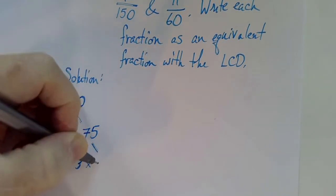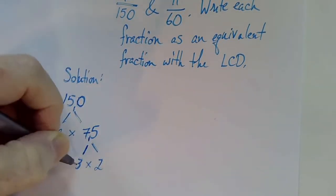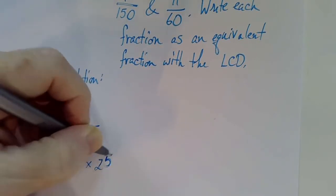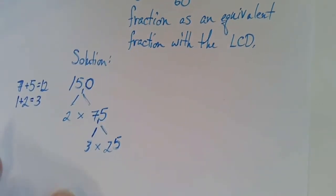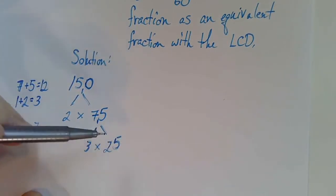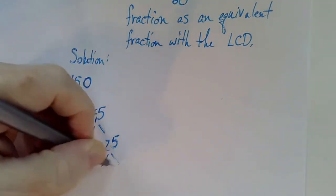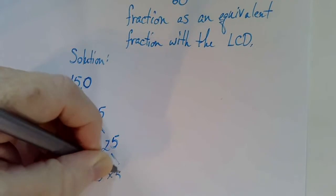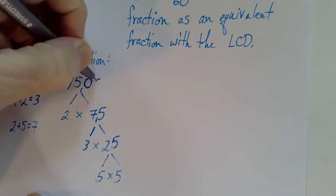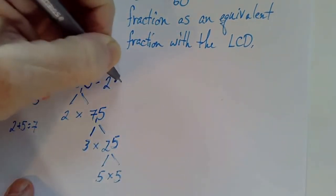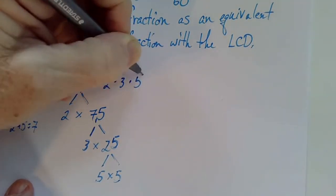Three goes into seven twice with the remainder of one. Three goes into 15 five times. Let's pretend that we are not sure whether or not three goes into 25. Two plus five is seven. Three doesn't go evenly into seven, so three can't go evenly into 25. We know that five does, and so we have that 150 is two times three times five squared.